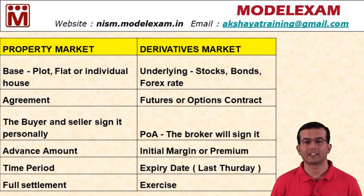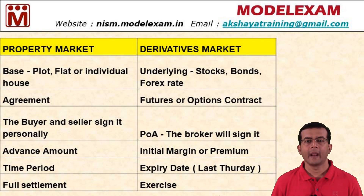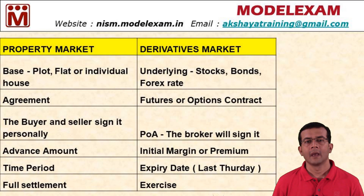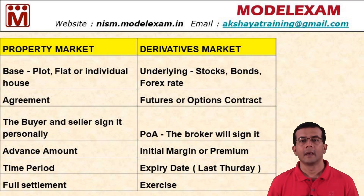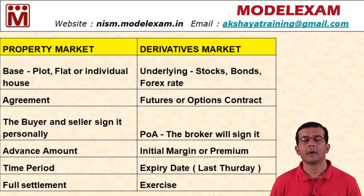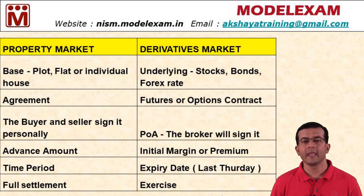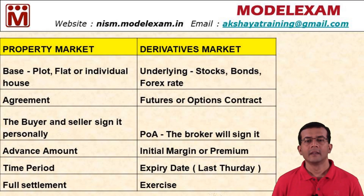In the property market, we give an advance amount, enter into an agreement, and after three or six months pay the full amount and take possession of the property. The same logic exists in the derivatives market and is called exercise. For example, if you are buying BHEL futures right now, you have entered into an agreement to purchase BHEL shares after one, two, or three months. After one month, if you pay in full and receive the BHEL shares in your DMAT account, that process is called exercise. This tabular column explains the analogy between the property market and the derivatives market.